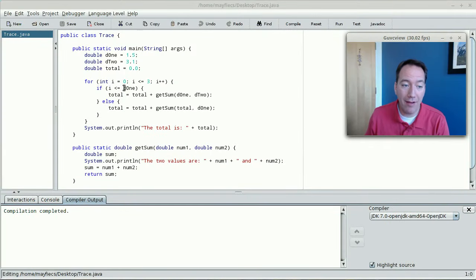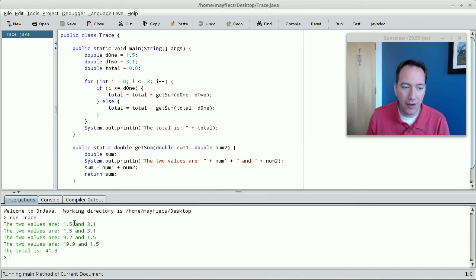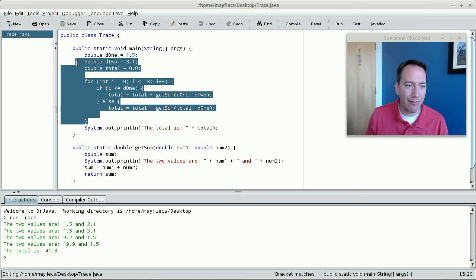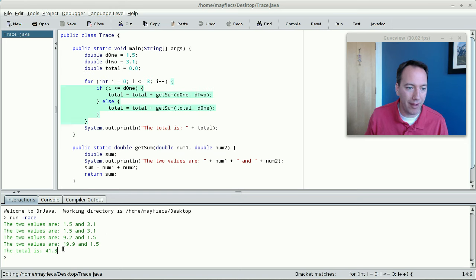So if you compare what we have on the sheet we just drew with what actually happens when I hit the run button, you can see over time the two values that were added each time the getSum method was called: 1.5 and 3.1, 1.5 and 3.1, and so forth. And then the very last line of output of the program after this entire for loop completes is 41.3.